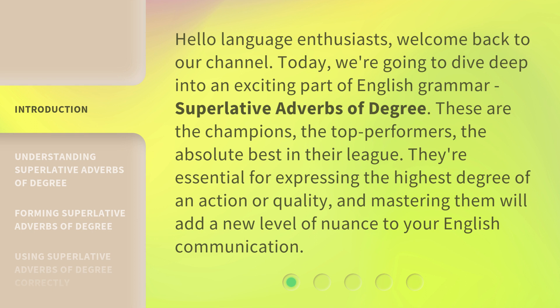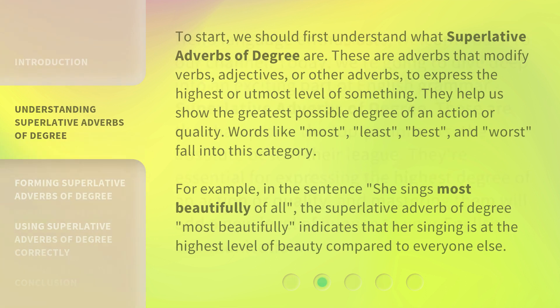These are the champions, the top performers, the absolute best in their league. They're essential for expressing the highest degree of an action or quality, and mastering them will add a new level of nuance to your English communication. To start, we should first understand what superlative adverbs of degree are. These are adverbs that modify verbs, adjectives, or other adverbs to express the highest or utmost level of something. They help us show the greatest possible degree of an action or quality. Words like most, least, best, and worst fall into this category.